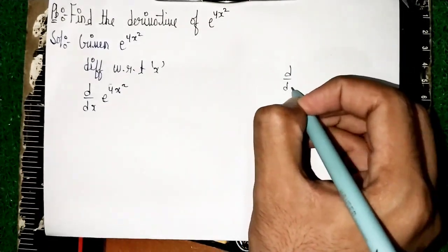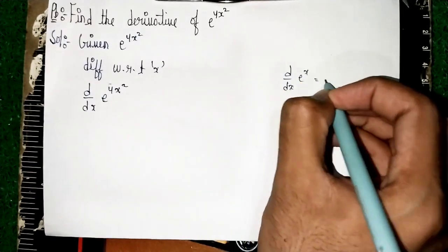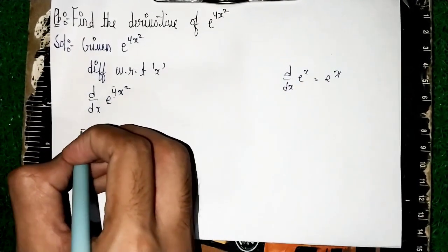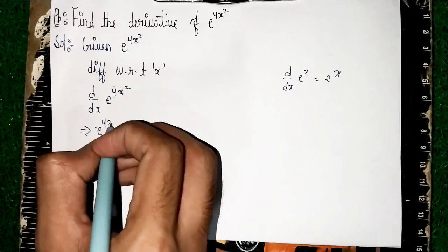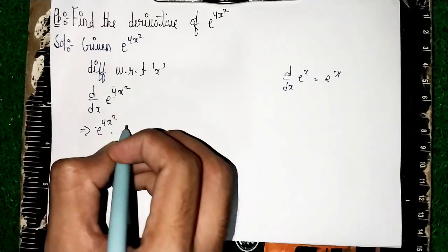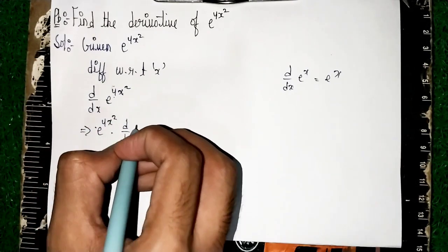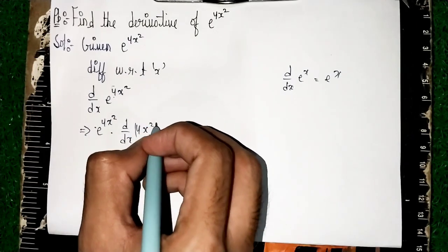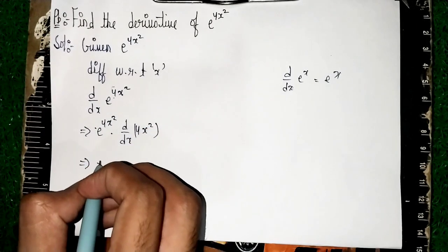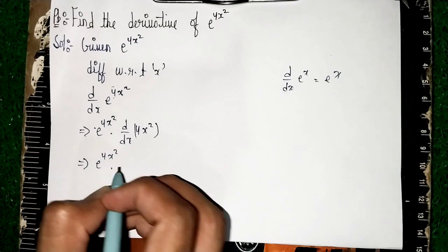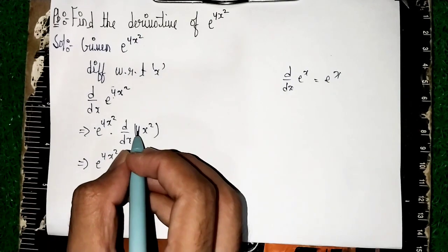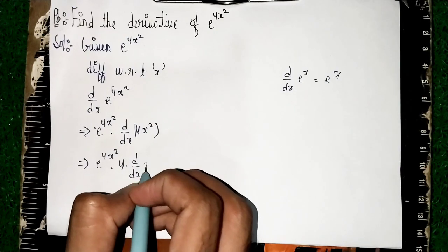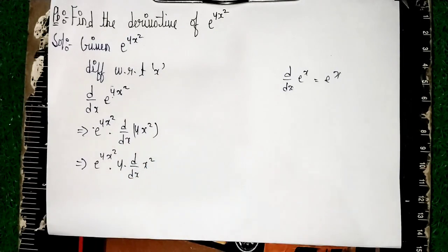d by dx of e power x is e power x itself. So first it becomes e power 4x squared into d by dx of 4x squared. Now here, e power 4x squared, taking 4 outside: 4 into d by dx of x squared.